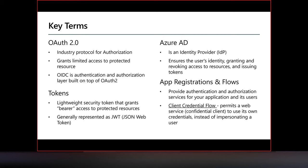Before we jump into OAuth, Azure AD, and implementing API authentication, let's revisit some key terms. OAuth 2.0 is an industry standard protocol for authorization — it allows users to grant limited access to protected resources, is designed to work with HTTP, and separates the role of the client from the resource owner. OIDC, or OpenID Connect, is an authentication and authorization layer built on top of OAuth 2.0.